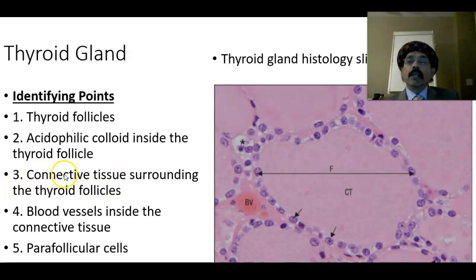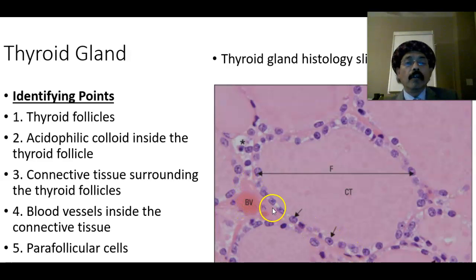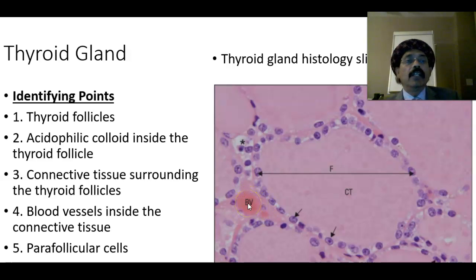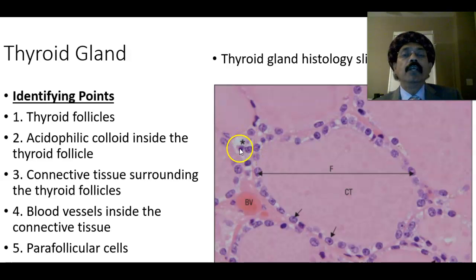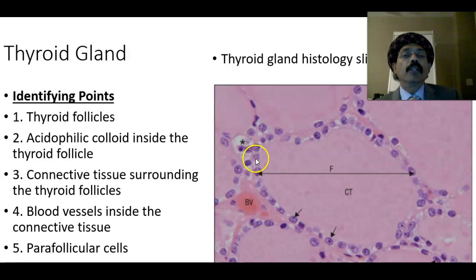The connective tissue surrounding the follicles is rich in blood vessels and reticular fibers. These are fenestrated capillaries. We have parafollicular cells at the periphery of the follicle. Parafollicular cells are also called clear cells because their staining is light, and they are slightly larger than the normal cuboidal follicular cells of the thyroid follicle.